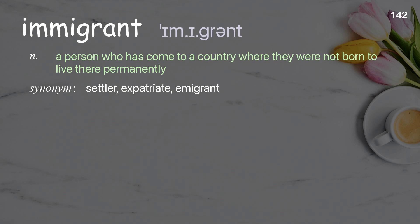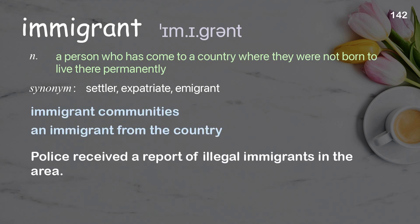Immigrant: a person who has come to a country where they were not born to live there permanently. Examples: immigrant communities, an immigrant from the country. Police received a report of illegal immigrants in the area.